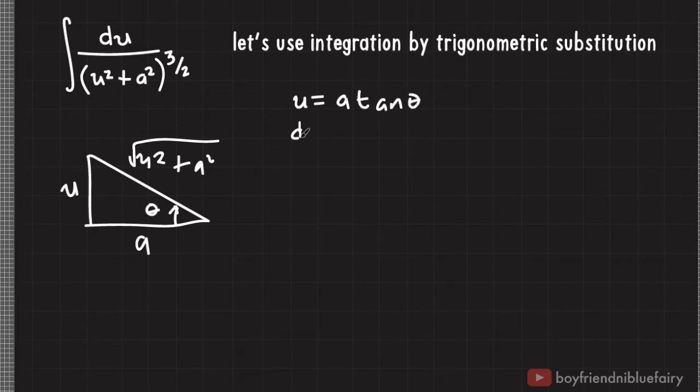Then, the derivative of u or du is equal to a secant squared theta. Then, by chain rule, d theta.